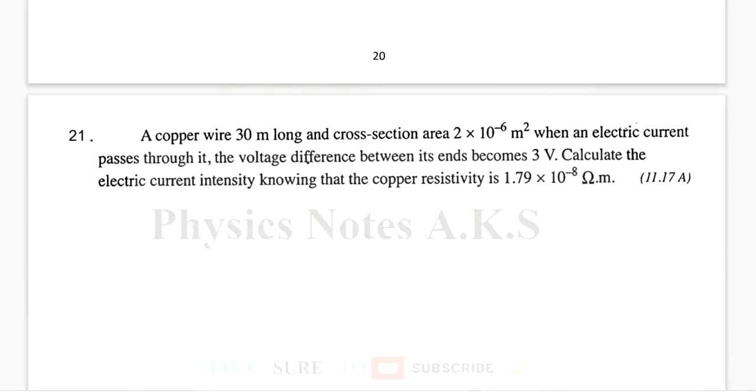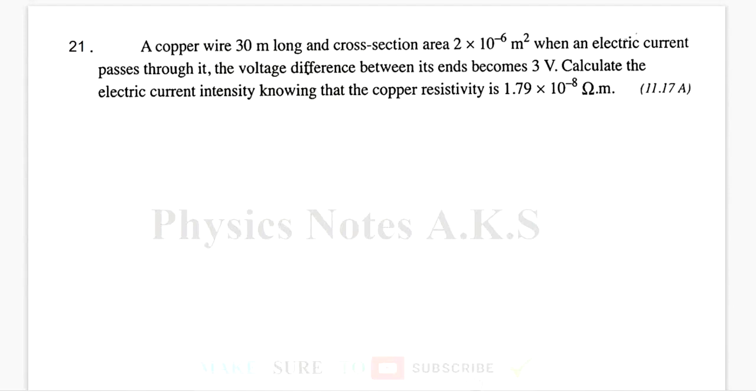We go to the next question, number 21. The next question says: copper wire 30 meters long, again, length is 30 meters. And the cross-section area is 2 × 10^-6 m². When an electric current passes through it, the voltage difference or the potential difference between its ends becomes 3 volts. So, the potential difference is 3 volts. They say calculate the electric current intensity.